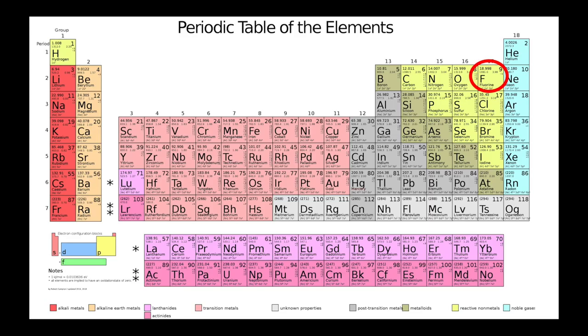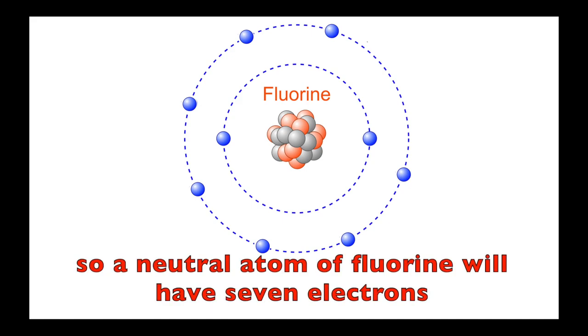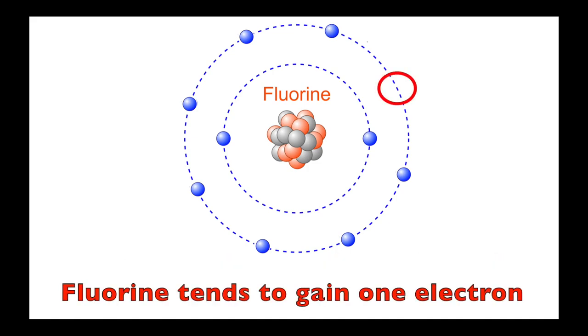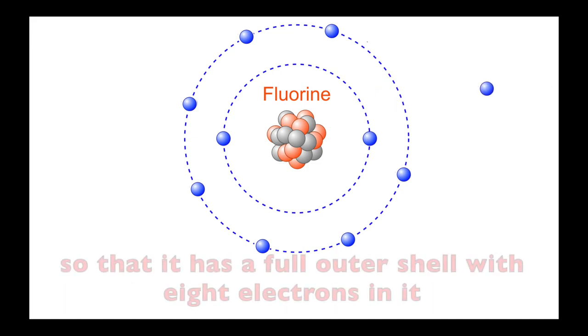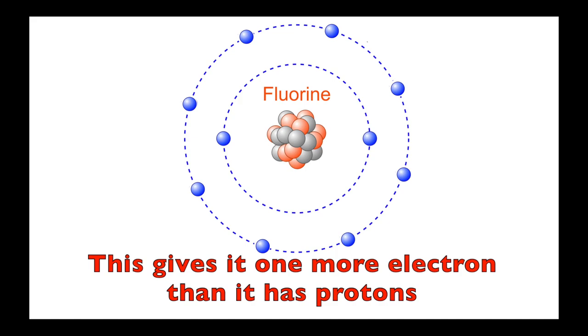Now let's look at fluorine. Fluorine has seven protons, so a neutral atom of fluorine will have seven electrons. Fluorine tends to gain one electron, so that it has a full outer shell with eight electrons in it. This gives it one more electron than it has protons.